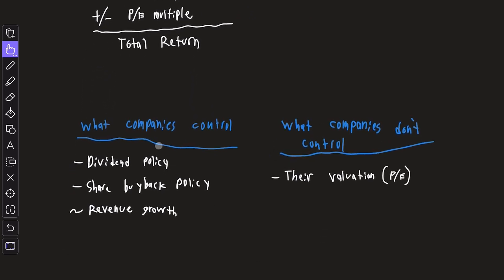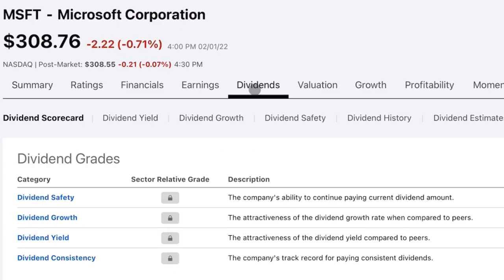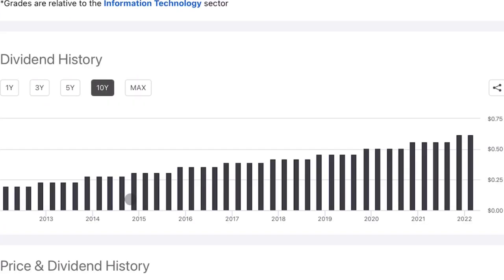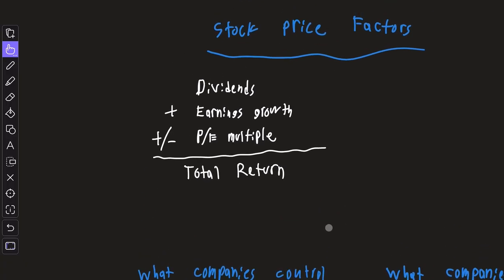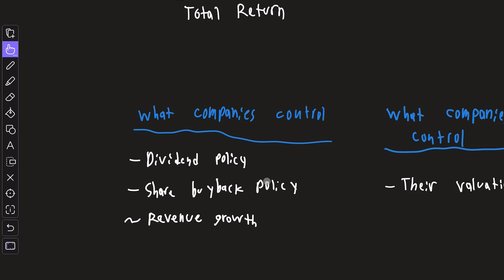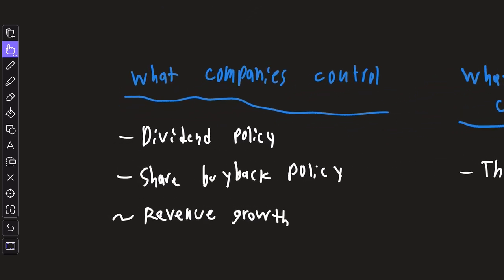The first group is what companies can control internally, and the second is what companies can't control. In terms of what companies can control, this includes their dividend policy. Using Microsoft as an example, every single year on the dot the company increases their dividend payout as their earnings increase, giving that profit back to the investor. The second major factor is earnings growth — companies can control this, though they can't change it overnight. If they're quality and make proper investments, they can do this. Share buybacks is a tool companies can use to limit outstanding shares and boost EPS.